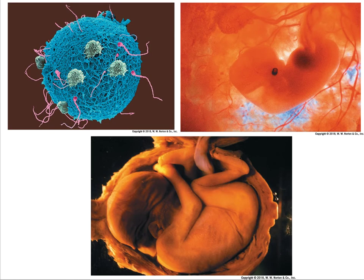In the upper left, the union of the egg and the sperm forms the zygote. In the upper right, the zygote develops into an embryo. And at the bottom, the embryo becomes a fetus.